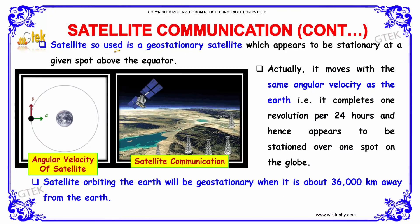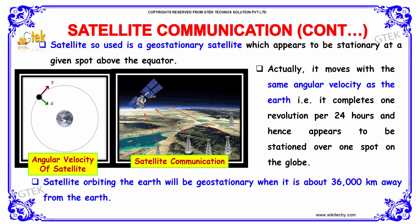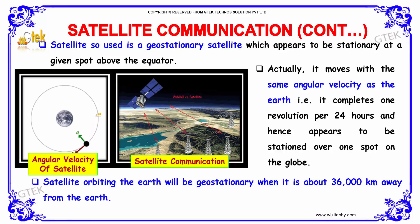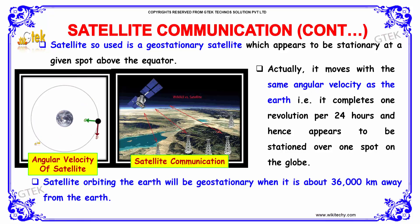The satellite used is a geostationary satellite, which appears to be stationary at a given spot above the equator. It actually moves with the same angular velocity as the Earth, completing one revolution per 24 hours, and hence appears stationed over one spot on the globe. A satellite orbiting the Earth will be geostationary when it is about 36,000 km away from the Earth.